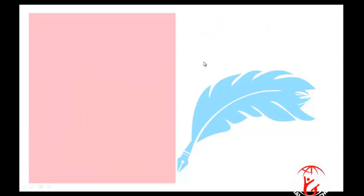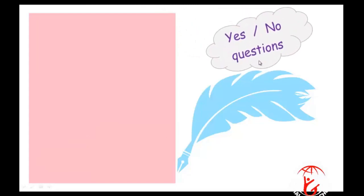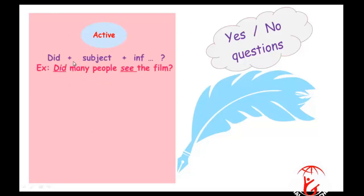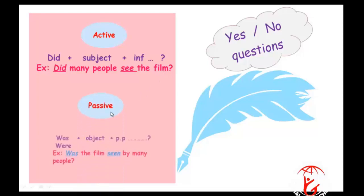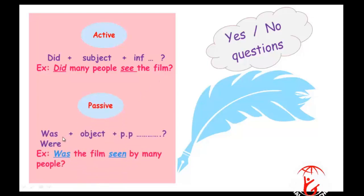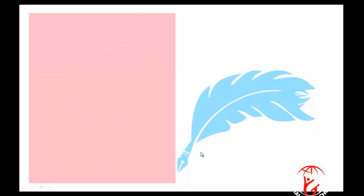Now yes/no questions. In the active form we start with did, then subject, then the infinitive — for example, 'Did many people see the film?' In the passive form, we don't use did. Instead we use was/were plus object plus past participle — for example, 'Was the film seen by many people?' You can answer with yes or no.